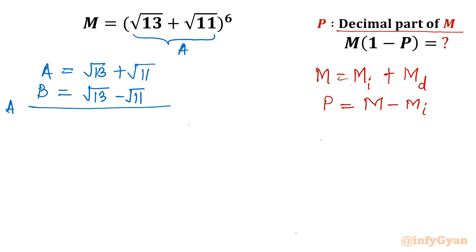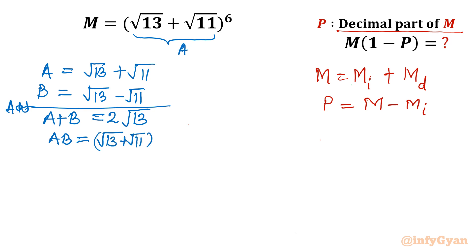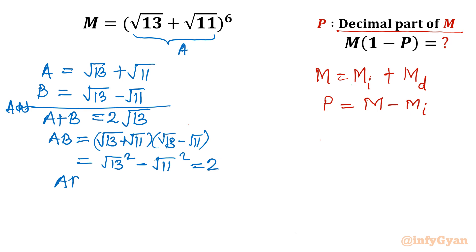Now purposely add both numbers a and b. So a plus b equals 2 root 13, since the root 11 terms cancel. Now taking the product a times b: it is (root 13 plus root 11)(root 13 minus root 11), which is the difference of two squares — root 13 squared minus root 11 squared — giving us 13 minus 11 equals 2. So ab equals 2.